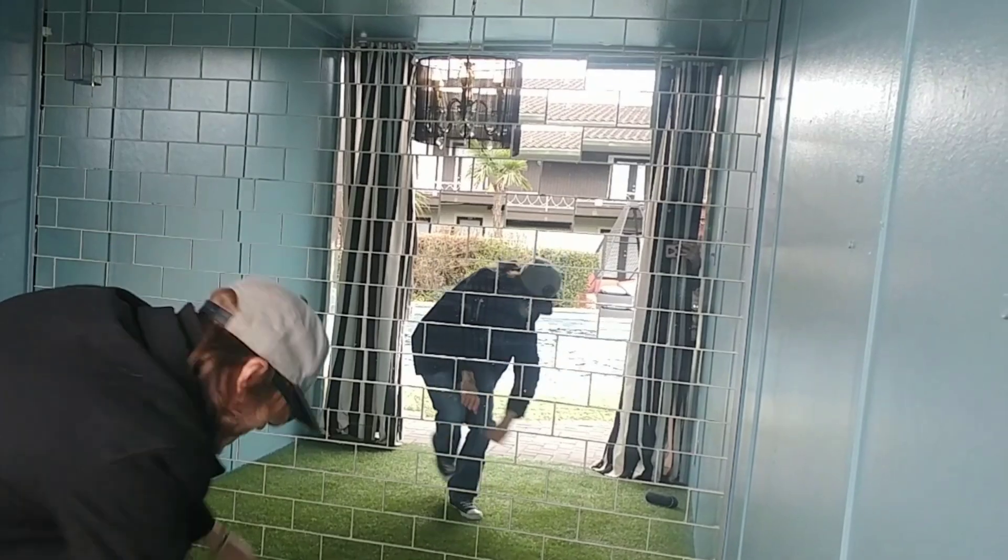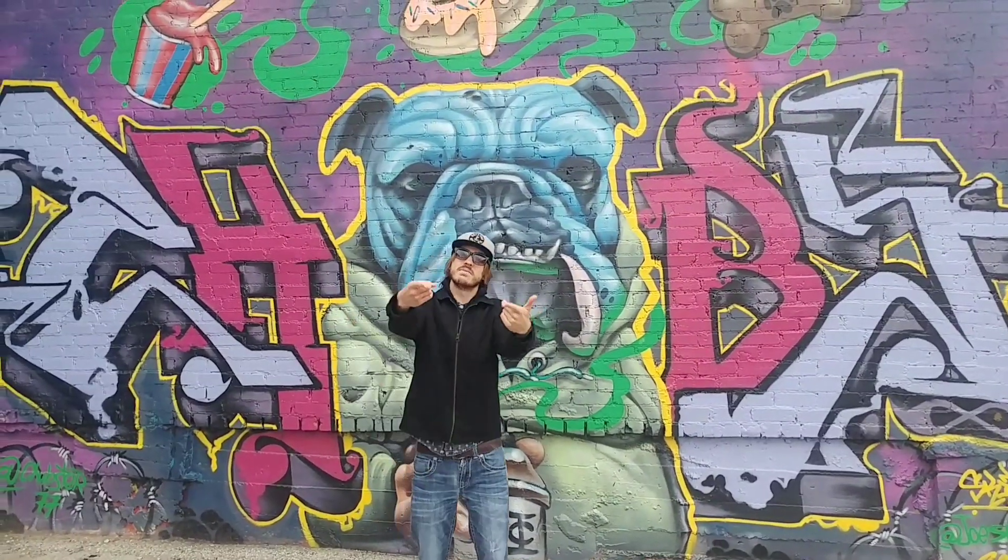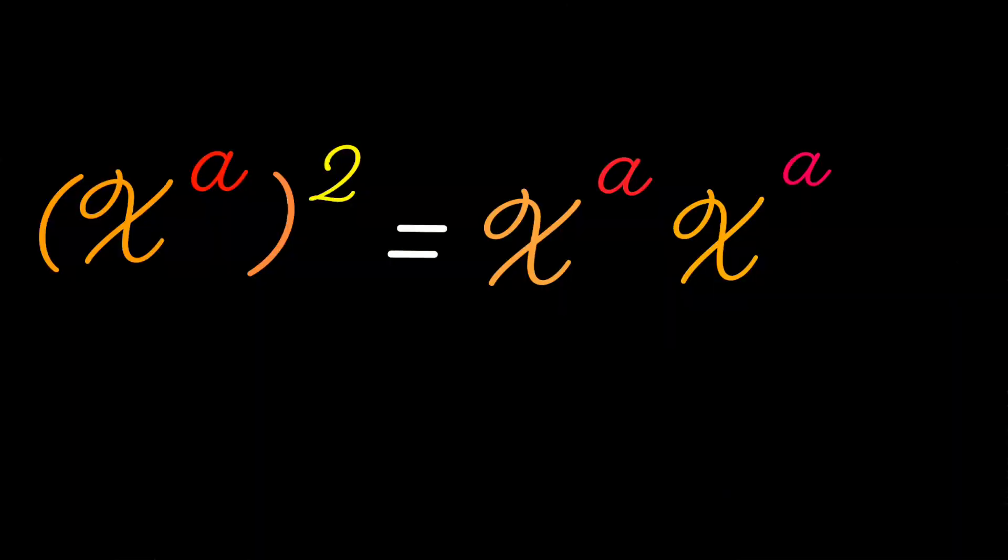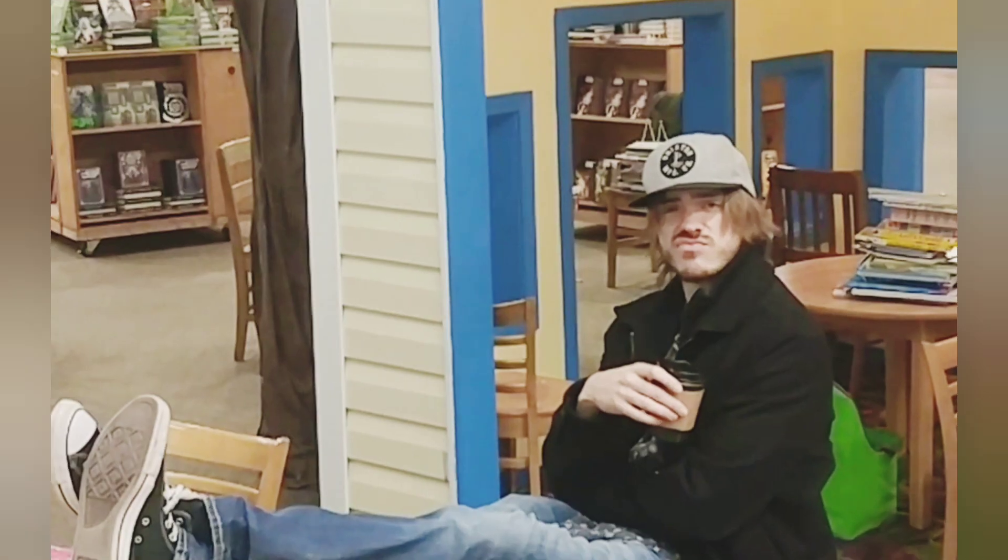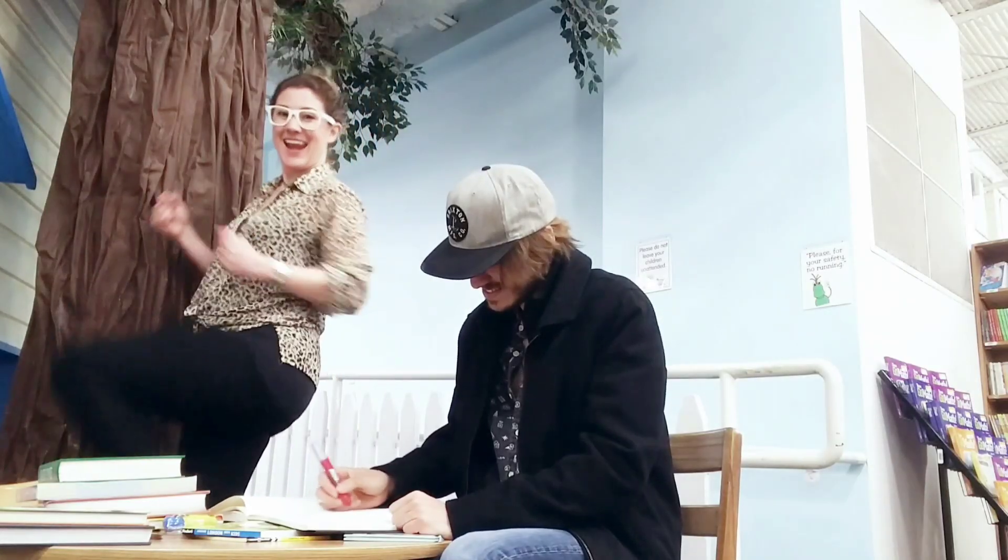X to the A in parentheses. Oh, I know this one! I'm telling my homies, X to the A times another one of those, then we use the first rule. And add 'em, here we go. Teacher coming over, I'm feeling mighty proud, then she tells me the shortcut.